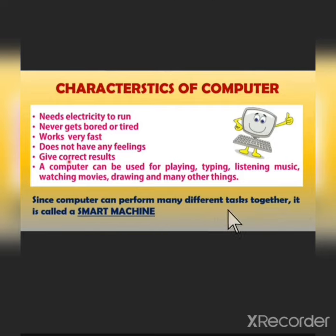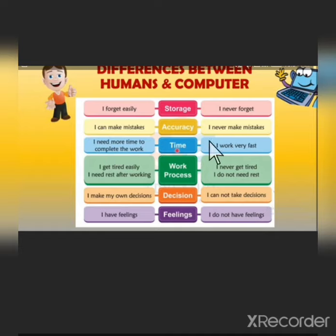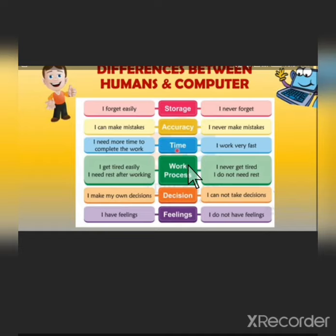Since a computer can perform many different tasks together, it is called a smart machine. Now, differences between humans and computers: in terms of storage, humans forget easily but a computer never forgets. In terms of accuracy, humans can make mistakes but a computer never makes mistakes. In terms of time, humans need more time to complete work but a computer works in just seconds.